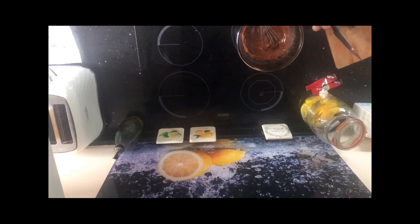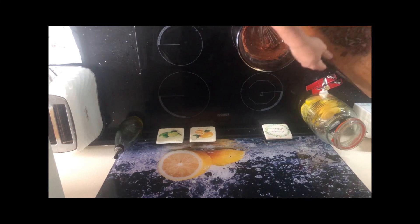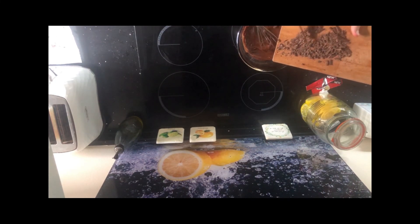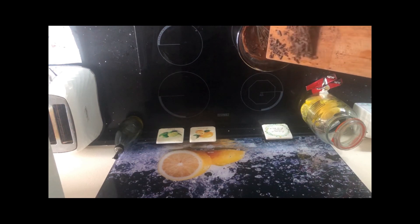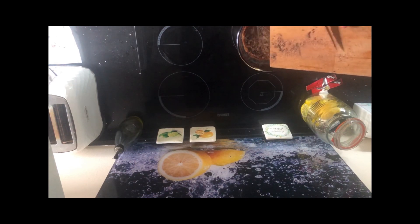Once melted, mix in the chopped chocolate you put aside earlier. Keep stirring until you hit a temperature of around 27 degrees. Once this has been achieved, spread evenly over the layer of caramel and put in the fridge to set.